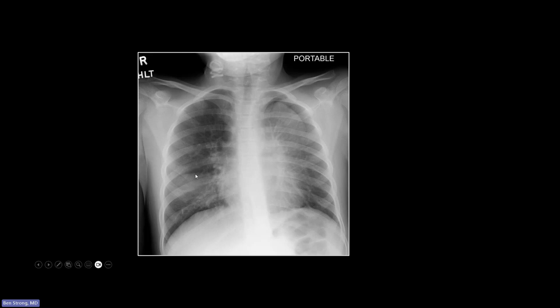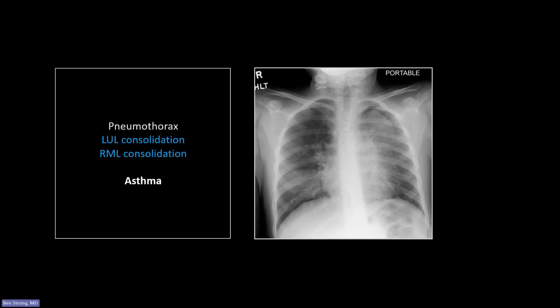The other interesting thing is there's right middle lobe involvement as well. When you have multifocal consolidation with potentially atelectasis and potentially a pneumothorax, that is acute asthma. These patients get bronchial plugging and mucus plugging, which results in atelectasis appearing as consolidation on X-ray. It can also cause pneumothorax — these patients are struggling and creating a very negative pleural pressure, which can pop any irregularity in the visceral pleura and result in a pneumo.